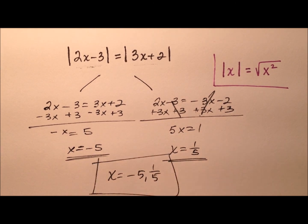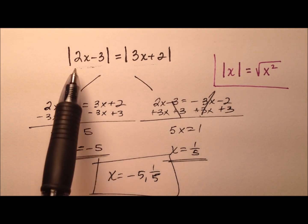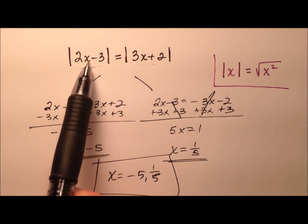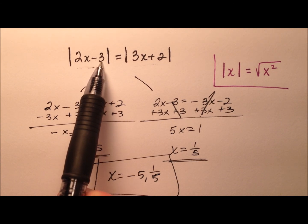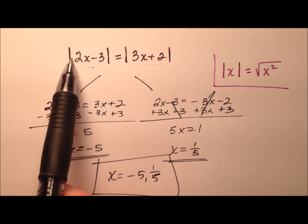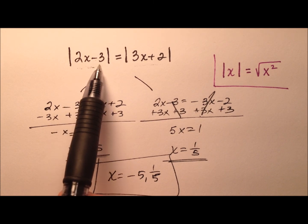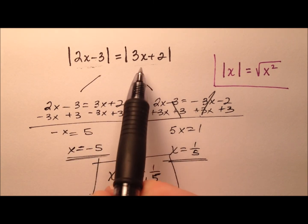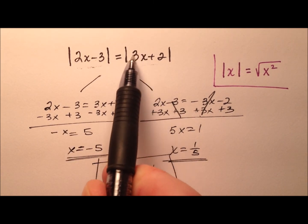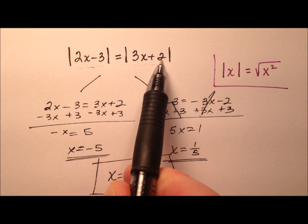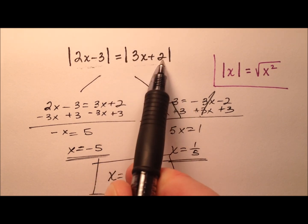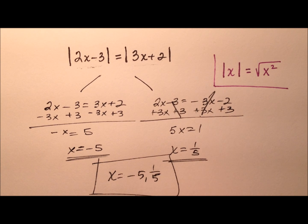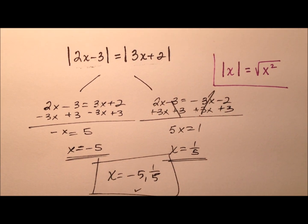Let's go ahead and plug these values back in to make sure they work. For negative 5: 2 times negative 5 is negative 10, minus 3 is negative 13 — the absolute value of negative 13 is positive 13. Then 3 times negative 5 is negative 15, plus 2 is negative 13 — the absolute value is again 13. So x equals negative 5 works because 13 equals 13.